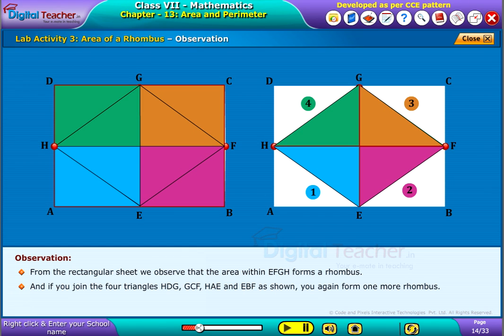And if you join the four triangles HDG, GCF, HAE, and EBF as shown, you again form one more rhombus.